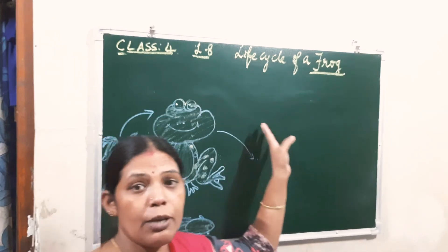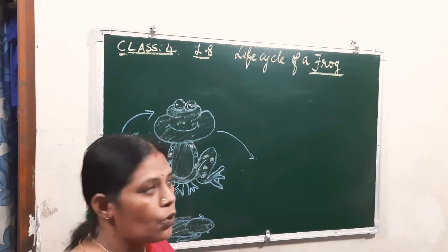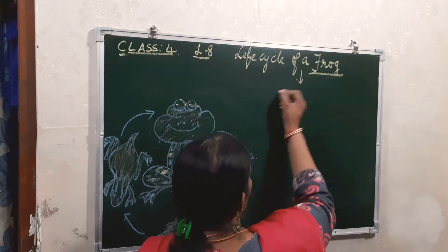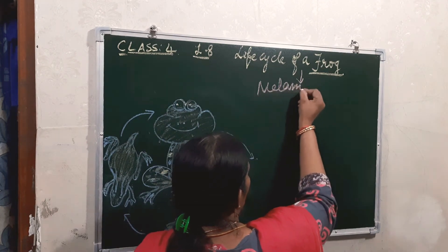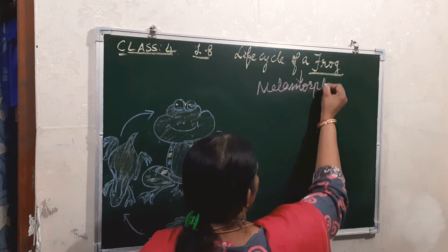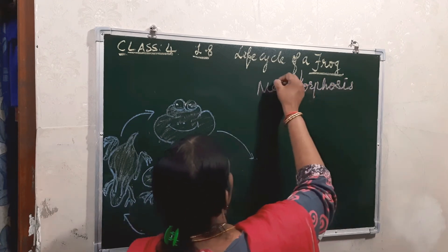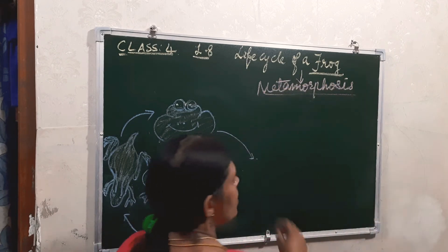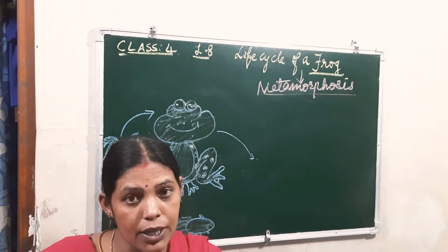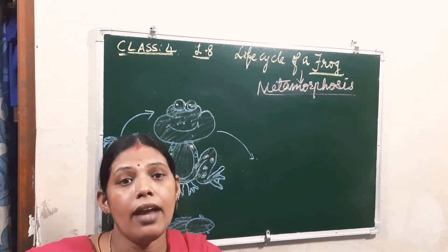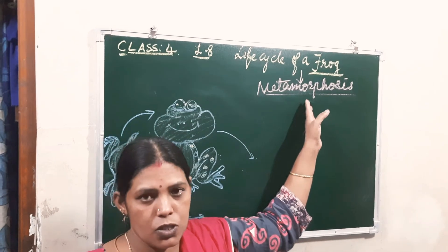Here, like the butterfly, the life cycle of the frog also undergoes metamorphosis. What is metamorphosis, children? It means the process of changing the young one to an adult one. That process is known as metamorphosis.